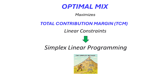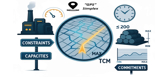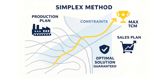Simplex linear programming sounds pretty intense. Think of it like a super smart GPS for your entire factory and sales plan. You tell it all the roads — machine speeds, how much time is available, raw material limits — and you tell it the rules of the road: minimums you have to sell, maximums the market will actually buy. The simplex method then calculates the one single unique route — the production and sales plan — that gives you the absolute highest TCM possible without breaking any of those rules or exceeding any limits.